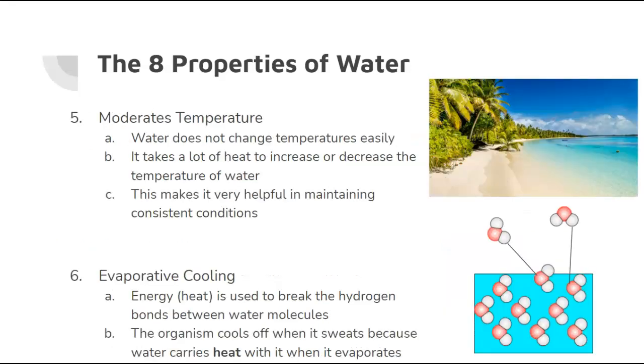Moving on to the next two, both of these deal with temperature. So moderating temperature, water just doesn't change temperatures easily. It takes a lot of heat to increase or decrease the temperature of water. So this is why, even though when you go to the beach in the middle of July, and it's like 100 degrees outside, the water in the ocean is still cool and refreshing. And it's because it takes so much heat to actually change the temperature of the water. This is the same thing as if you're boiling a pot of water, to make like macaroni and cheese or something. It takes a lot of heat to actually get that water boiling. It doesn't just automatically happen. It takes some time. And this is actually very helpful because it prevents super outrageous changes in our atmosphere.